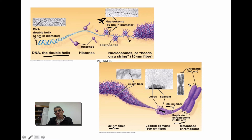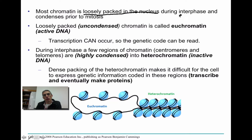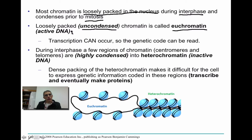As we continue to super coil, we eventually make our way to a replicated chromosome at around 1,400 nanometers. Chromosomes have two main parts: the centromere in the middle, and each side representing a chromatid—sister chromatids because this is a replicated chromosome. Most of the chromatin is loosely packed in the nucleus during interphase, which includes G1, S, and G2 phases. During the S phase, DNA replication occurs. Loosely packed or uncondensed chromatin is called euchromatin—considered active DNA—because the DNA instructs the cell what to produce through transcription, a process related to protein synthesis.